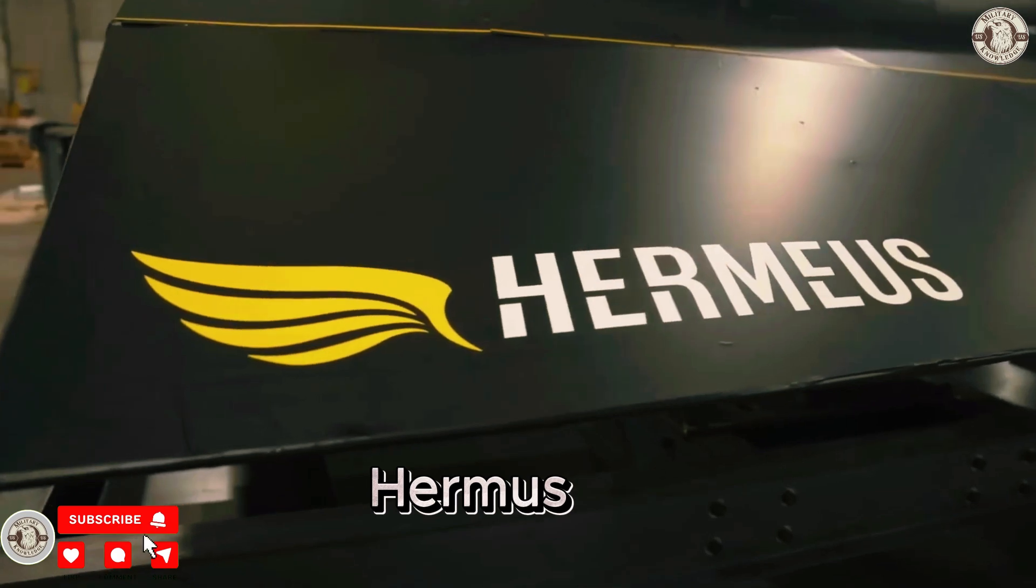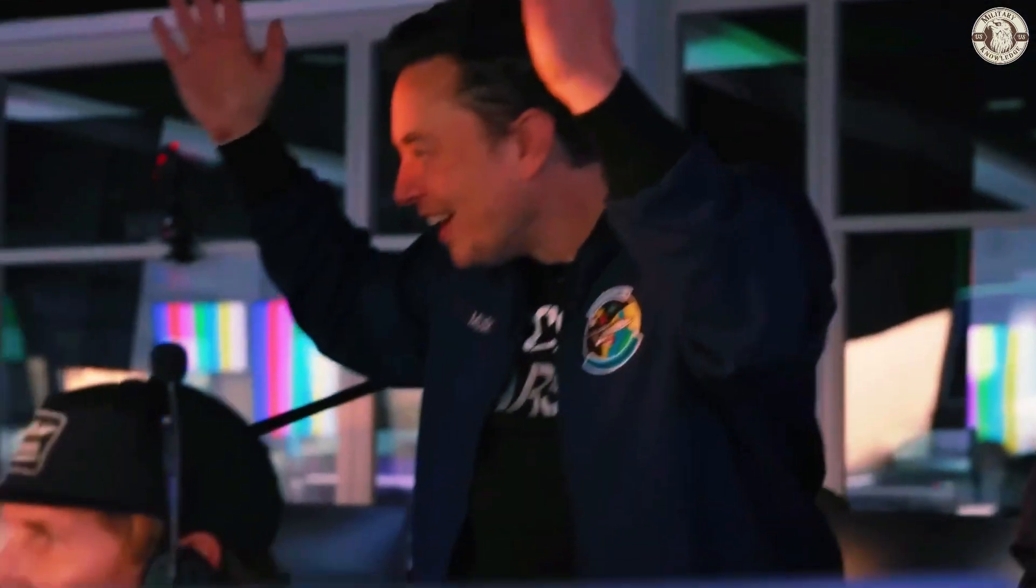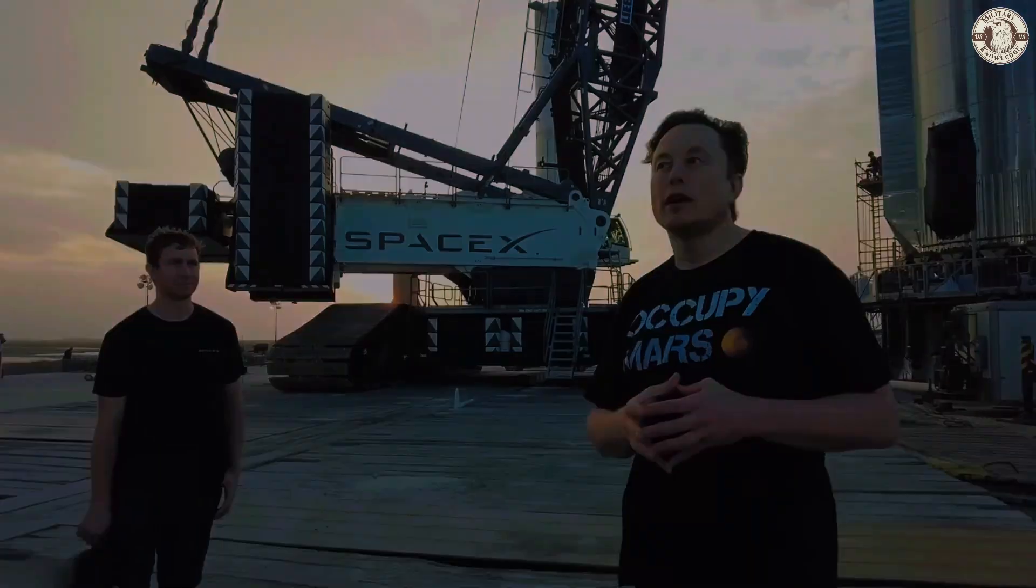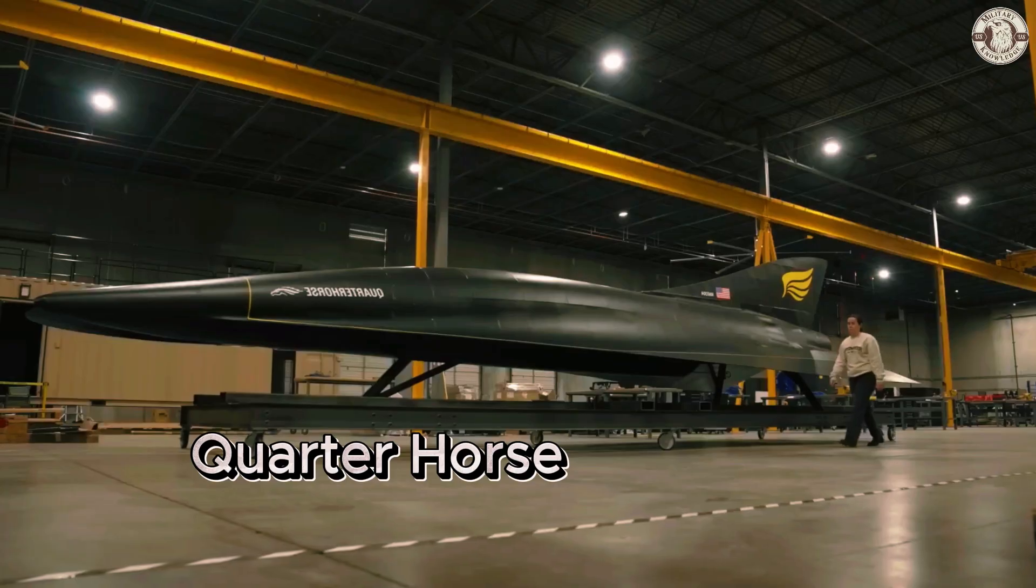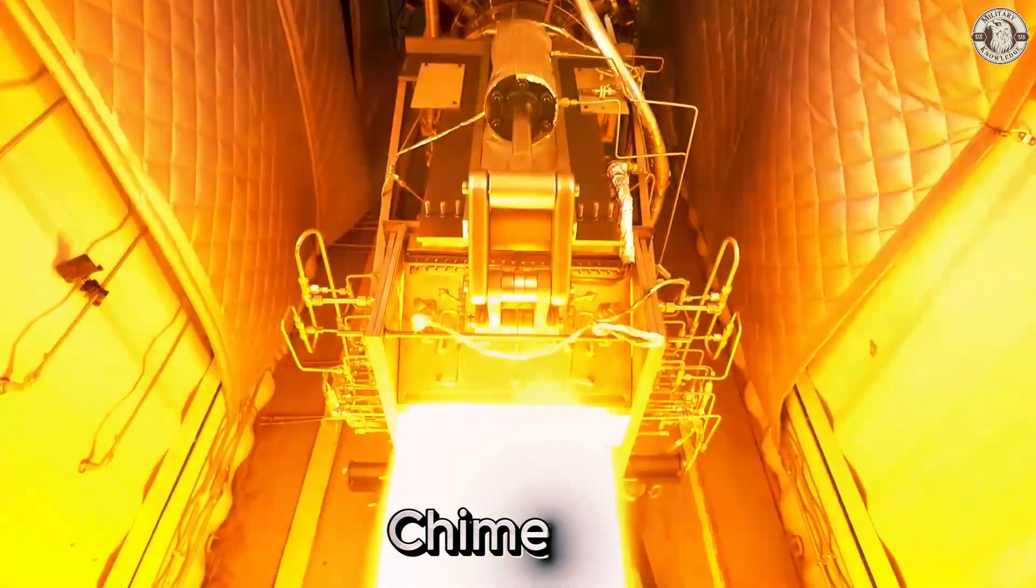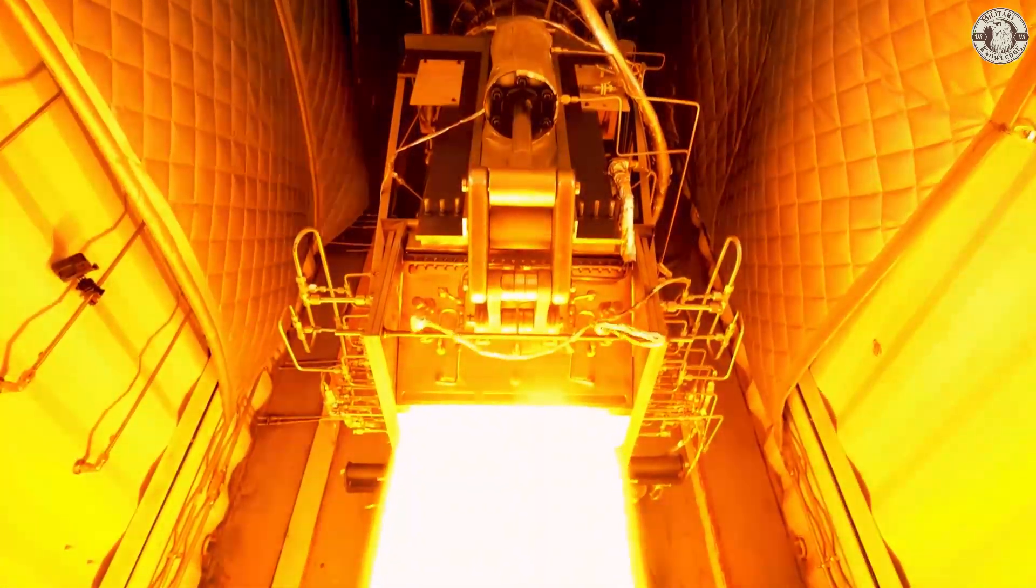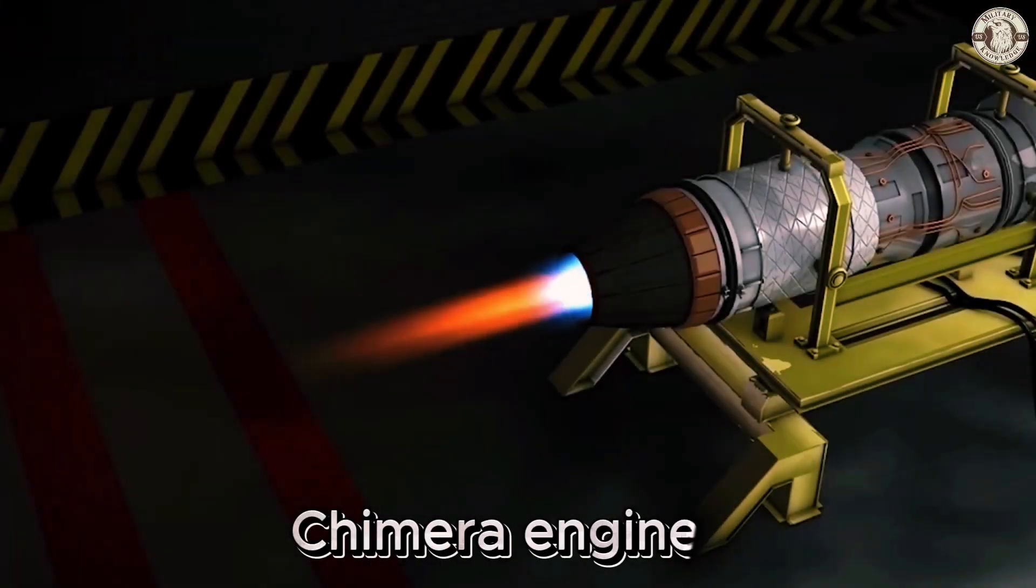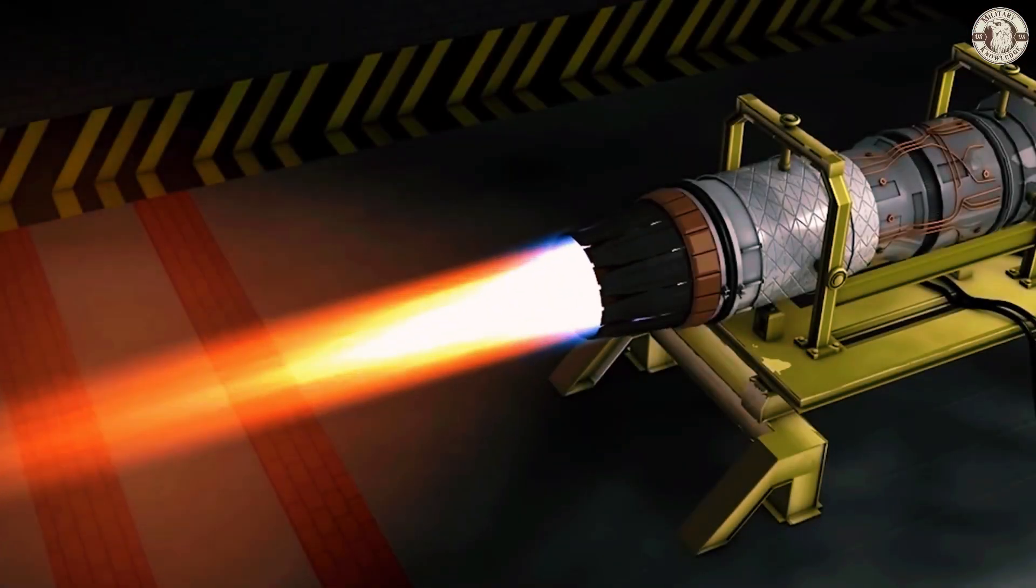Hermus isn't just daydreaming here. They're hard at work developing a next-gen prototype plane called Quarter Horse, and this isn't your average experimental aircraft. Quarter Horse is designed to break speed records, powered by their breakthrough engine named Chimera—a secret weapon they've already built. The Chimera engine is named after a mythical fire-breathing beast and it's just as fierce.